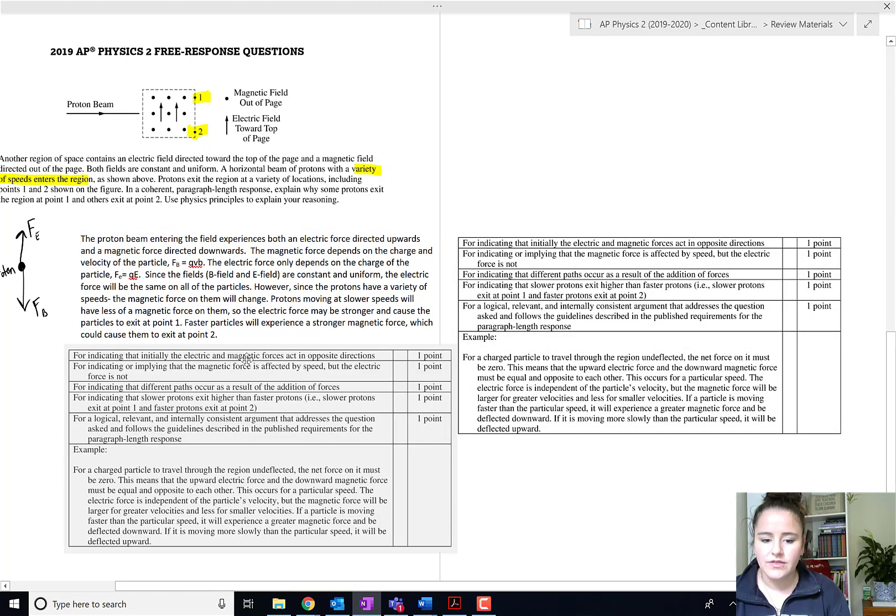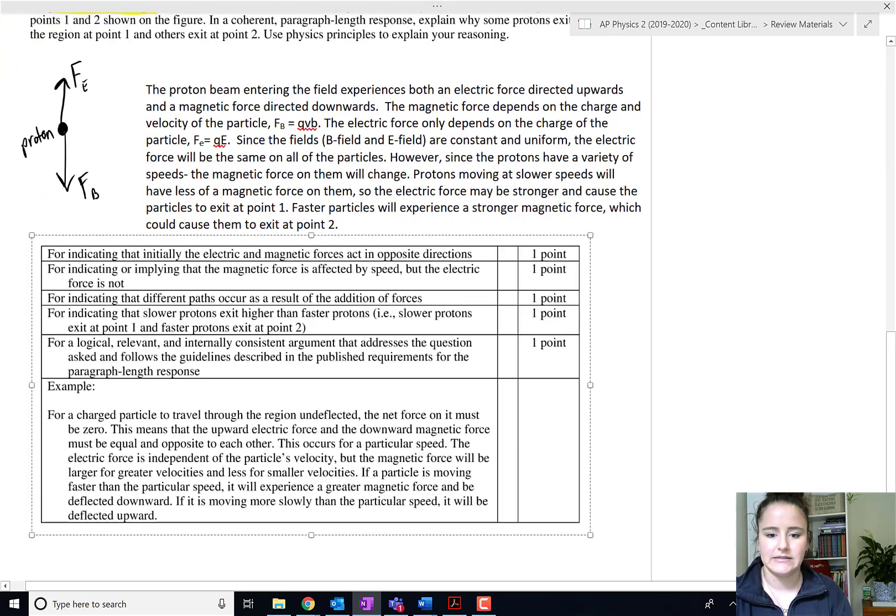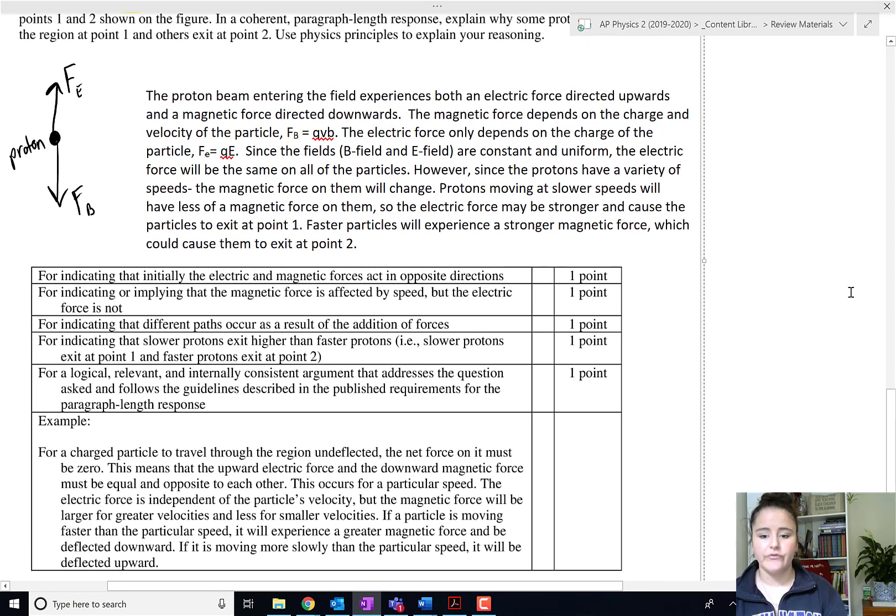For this paragraph length response, there's always going to be five points in a paragraph response. One of those points will always be a paragraph point. What that basically gives you credit for is just not contradicting yourself within the paragraph and actually writing a paragraph rather than just writing some equations there. While writing these equations, force electric, force magnetic, and the free body diagram does explain a lot of it, it's not a paragraph. So you need to make sure you get that point. That's an easy point to get.